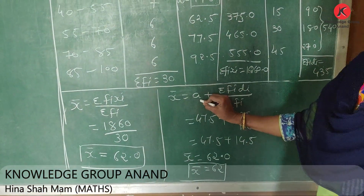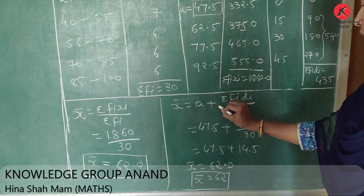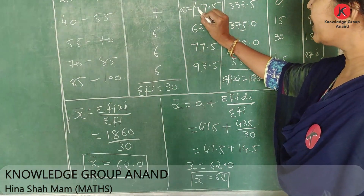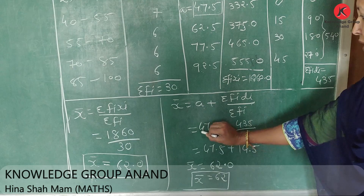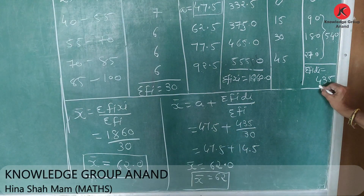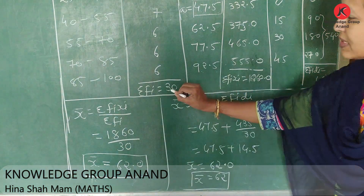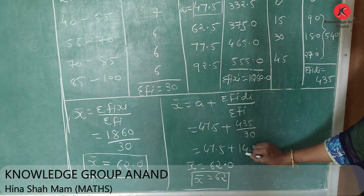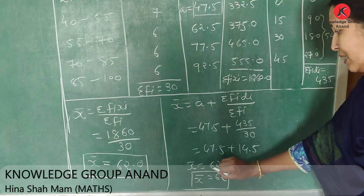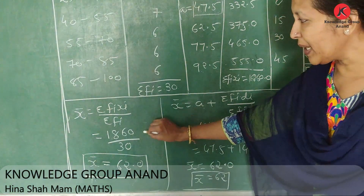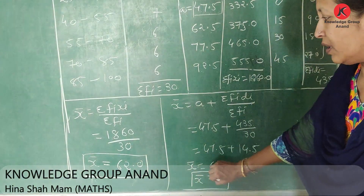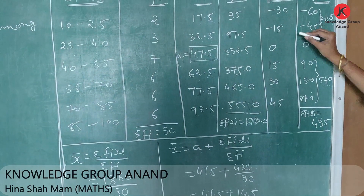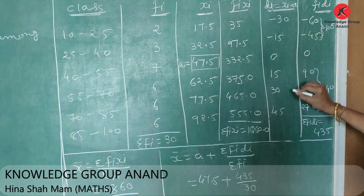Now we apply the assumed mean method. The formula is x̄ equals A plus sigma fi·di upon sigma fi. Here A equals 47.5, sigma fi·di equals 435, and sigma fi equals 30. So x̄ equals 47.5 plus 435 divided by 30 equals 47.5 plus 14.5 equals 62. In both methods the value of x̄ is equal — 62. The assumed mean method makes our calculation much easier.